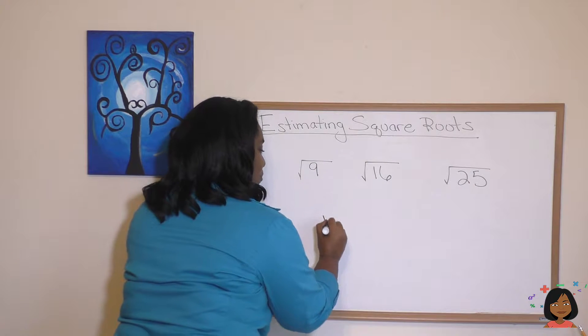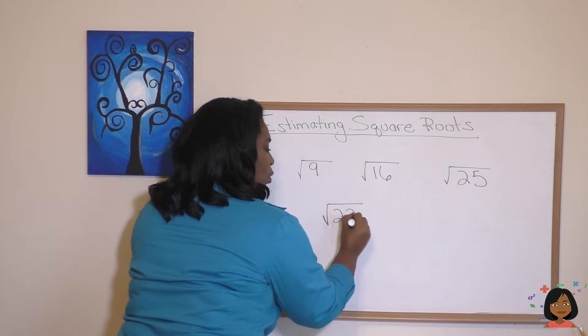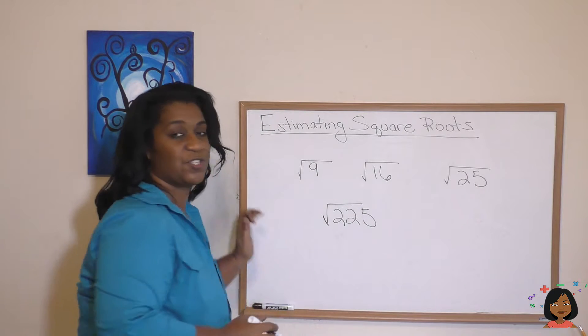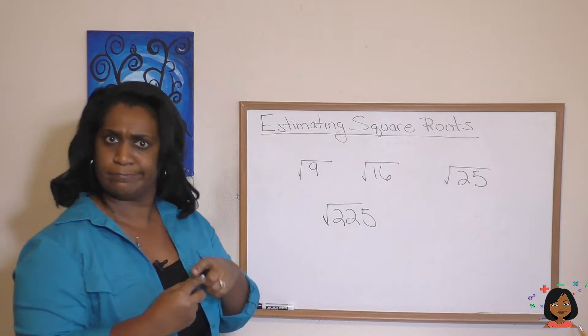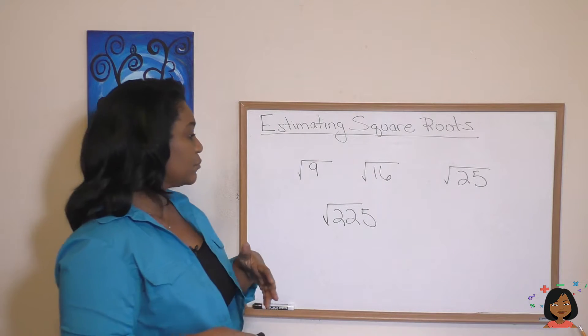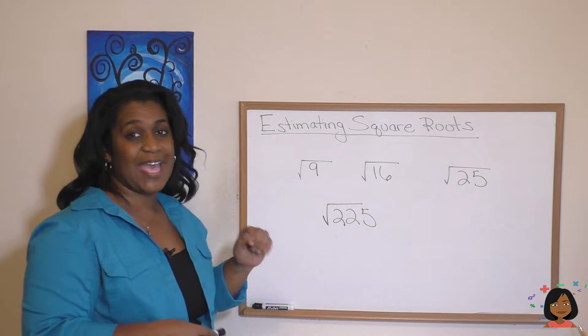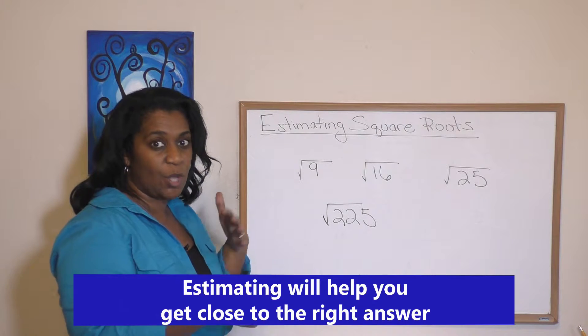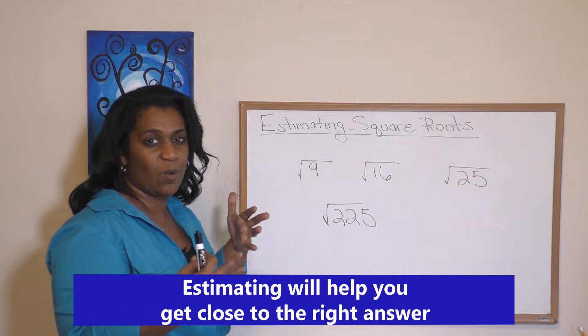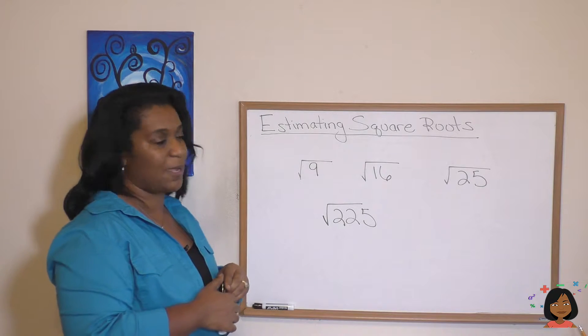So what if I gave you a number like this? Would you know the square root of 225? This is why we need to estimate. Sometimes we need to get close to the number to be able to figure out what that actual square root might be.